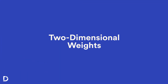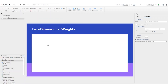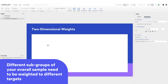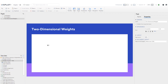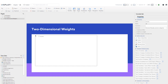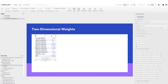Next I'll show you how to create a two-dimensional weight. These are handy when different subgroups of your overall sample need to be weighted to different targets. For example, men may have one set of targets for income and women may have a different set of targets. In this example we will use gender and income.